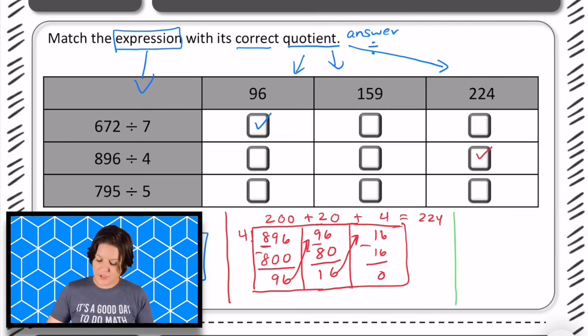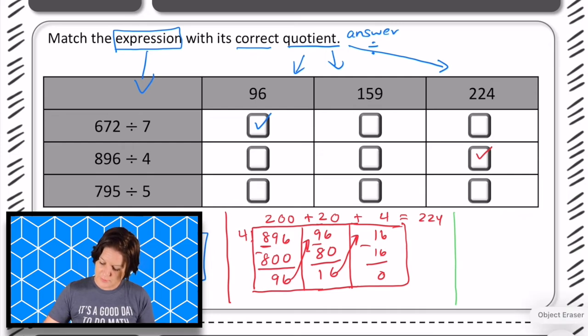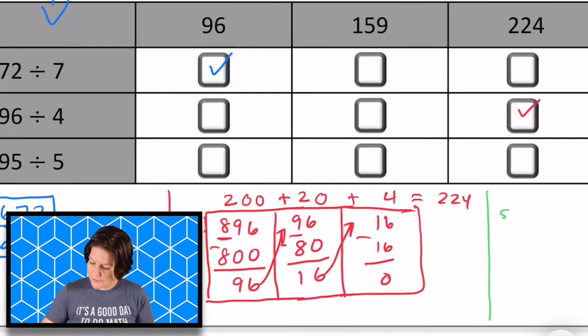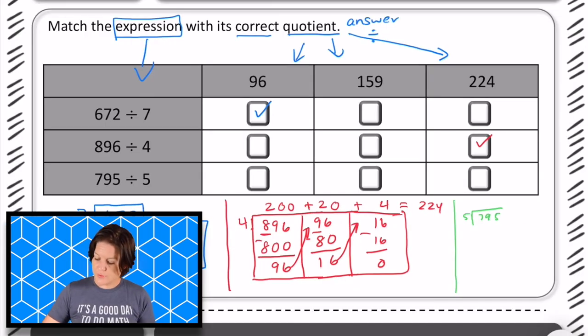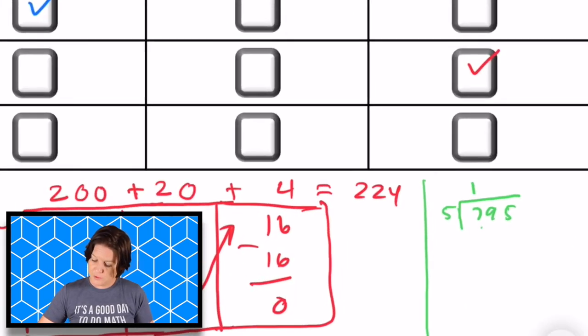Okay, and for the last one I have 795 divided by 5. For this one I'll go ahead and use long division. Okay, so you can see you can use a bunch of different strategies. Oops, I'm going to need to leave myself some room for this. Let me zoom in. So we have our divisor outside. We have 795 inside. So 5 goes into 7 one time, which is 5. Subtract and we get 2.